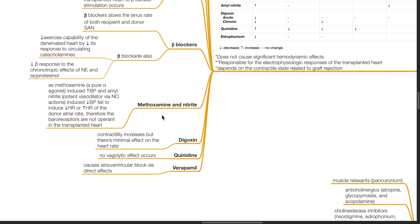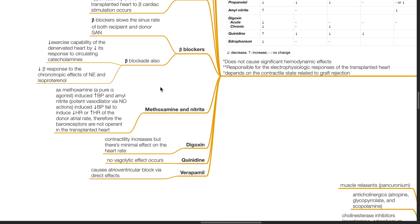Methoxamine and nitrite. Methoxamine is a pure alpha agonist and amyl nitrite is a potent vasodilator via nitrous oxide actions. Methoxamine-induced hypertension and nitrite-induced hypotension fail to induce bradycardia or tachycardia respectively. Therefore, the baroreceptors are not operant in the transplanted heart.